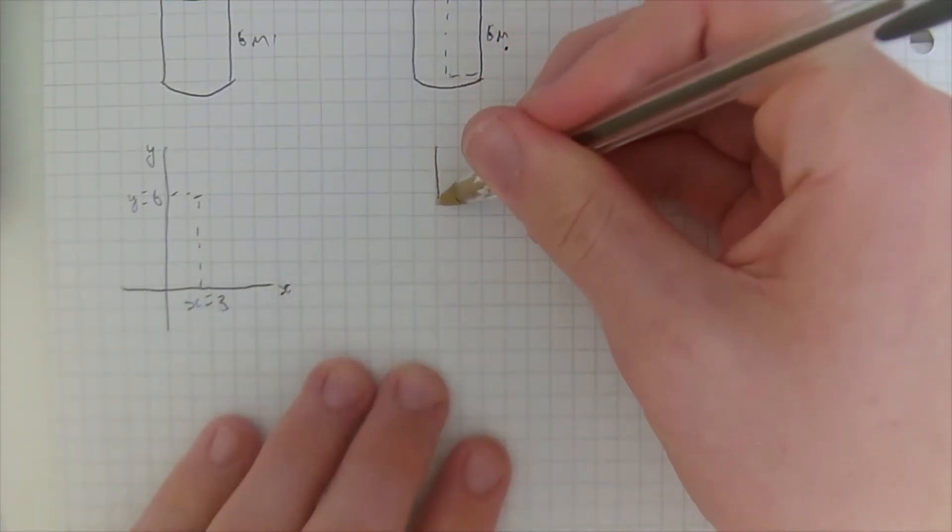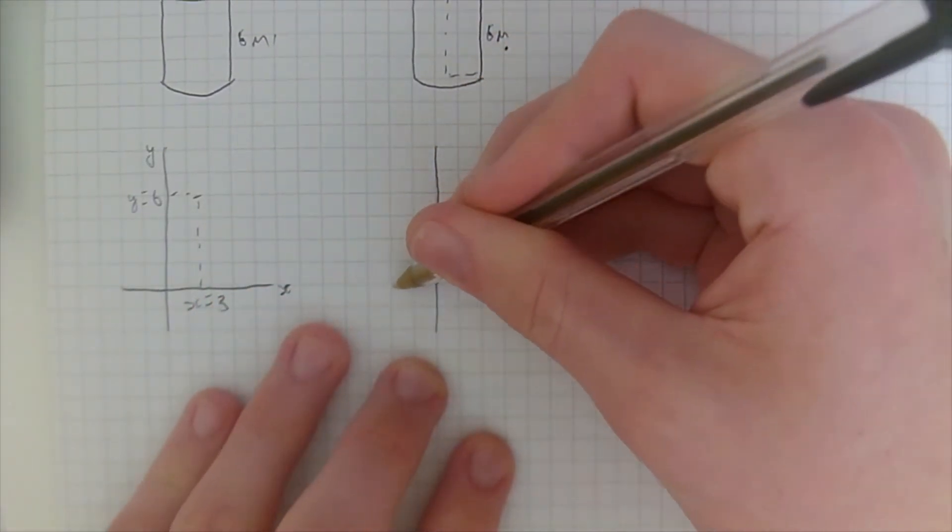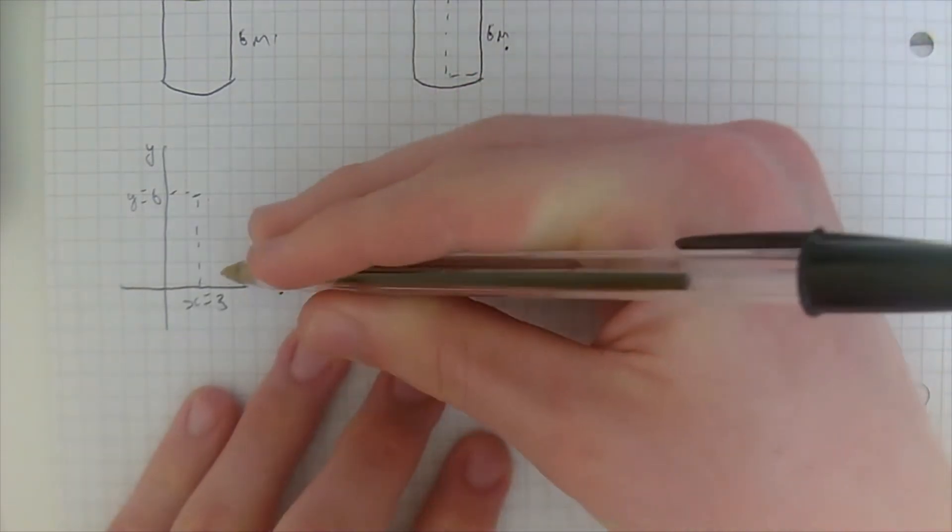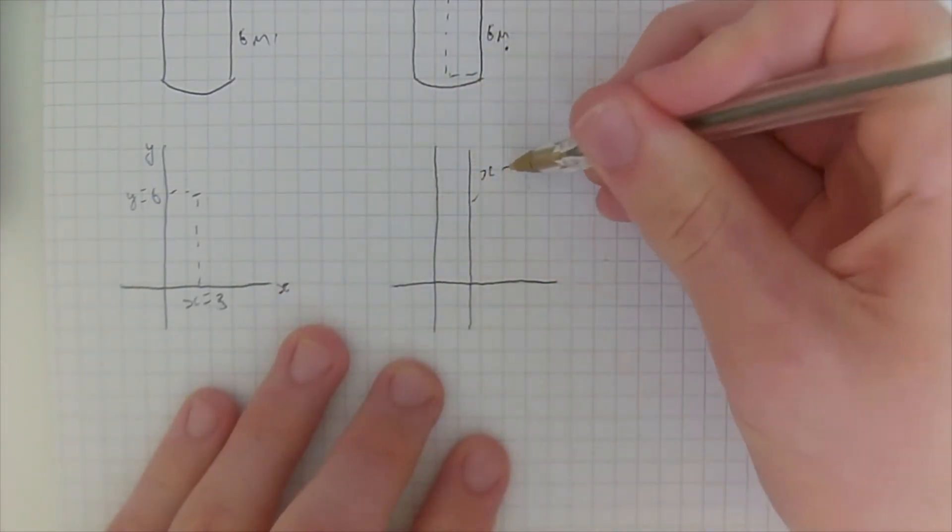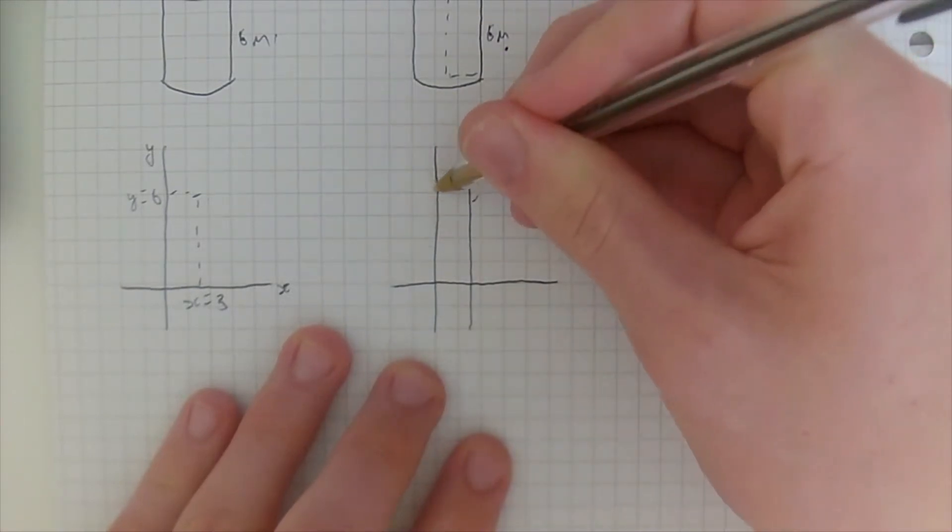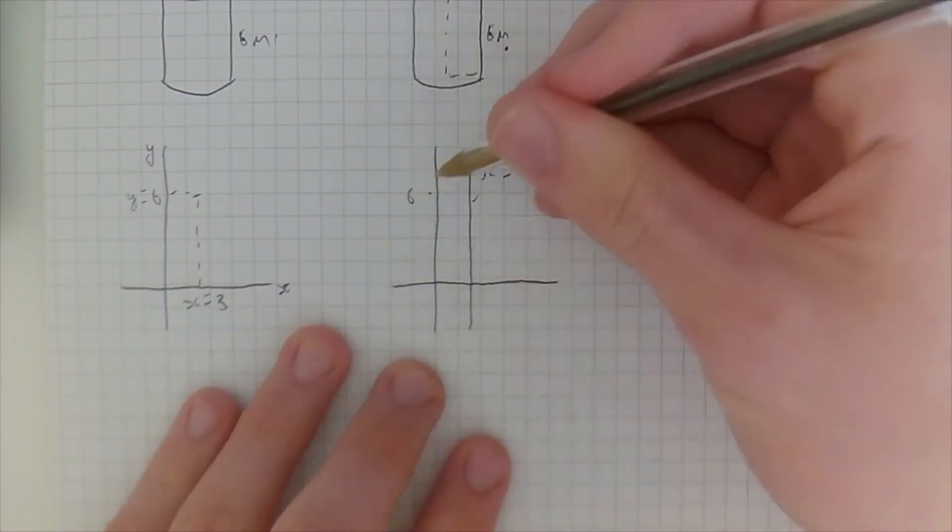So what we're going to do to find the volume of a cylinder is we're just going to take the x-line, draw in its entirety, this is the line x equals three, and we're just going to remember that that there is six.